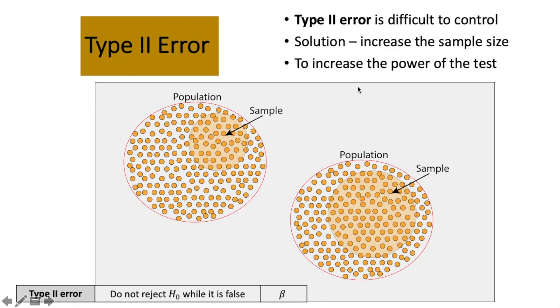A common solution suggested by most statisticians is to increase the sample size. When you increase the sample size, you are actually increasing the power of the test. Because as your sample size increases, there are higher chances that your results will be better and stronger.